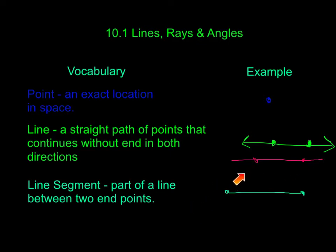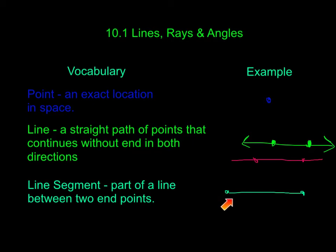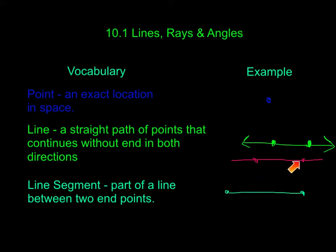When the line stops, it's called a line segment. A line segment is a part of a line between two end points. Here we have one end point and here we have another end point. Only the part in between these two end points is called a line segment.